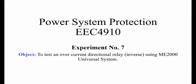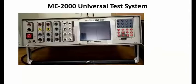The object of experiment number seven is to test an overcurrent directional relay of inverse type using the ME 2000 universal test system.